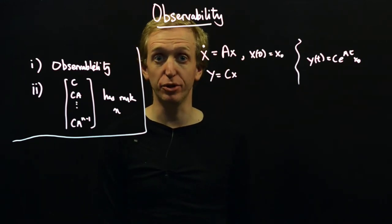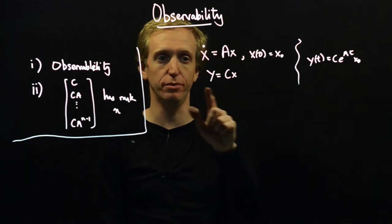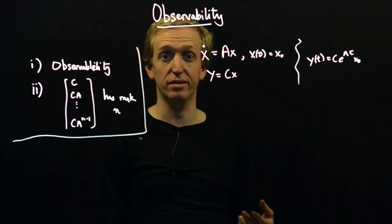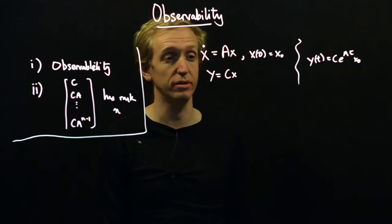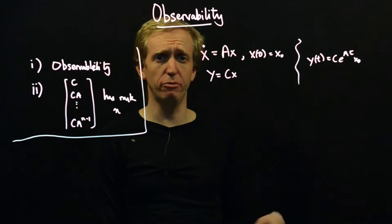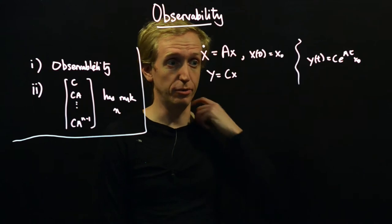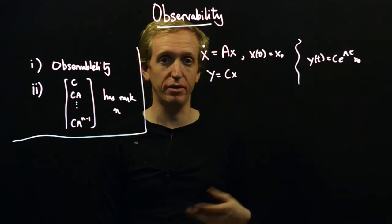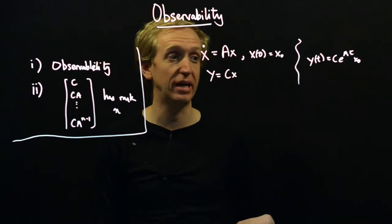But we often can't measure that. We often only get some snapshot through our output y, but we would like to use this to get the best estimate for the value of the state at the given time. And observability is trying to capture the idea of whether or not this is possible to do. So given the outputs that we have access to, are they going to be rich enough that we'll be able to deduce the value of the state?